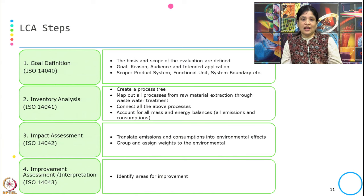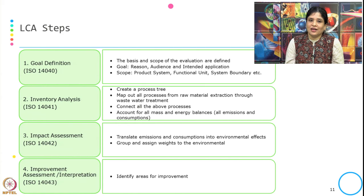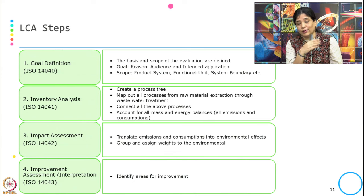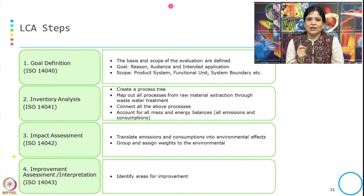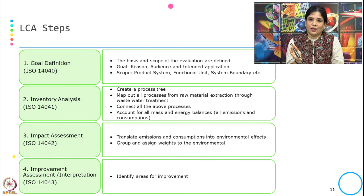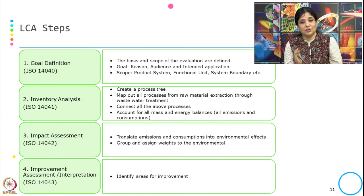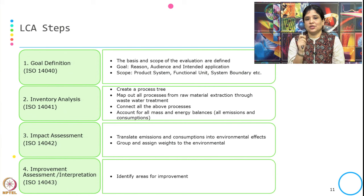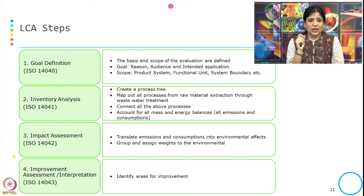In inventory analysis, the process tree is created, mapping out all processes from raw material to wastewater treatment — as shown in the previous textile example. All processes are connected, accounting for all mass and energy balances, including all emissions and consumption. Once the inventory of raw material uses, energy uses, and outcomes is created, we move into impact assessment.